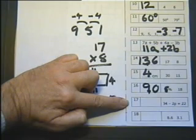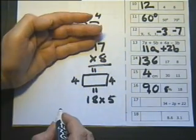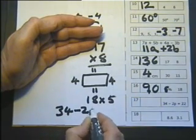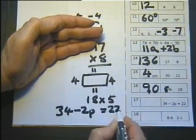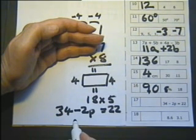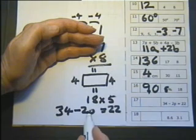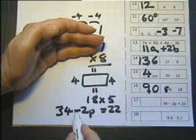Number 17: What is the value of P in the equation on your answer sheet? So we've got 34 minus 2P equals 22. Now I think the best way to solve this is actually how you would solve an equation, or you could say in your head 34 minus 2P is going to be 22.